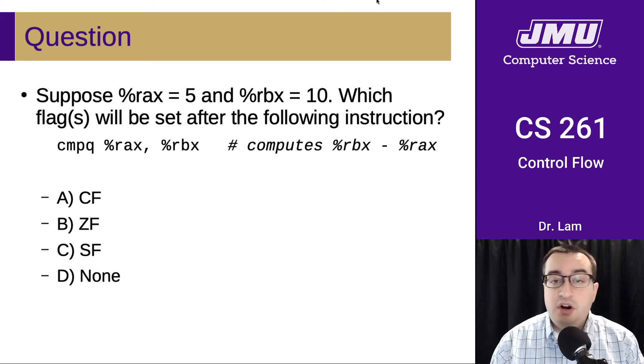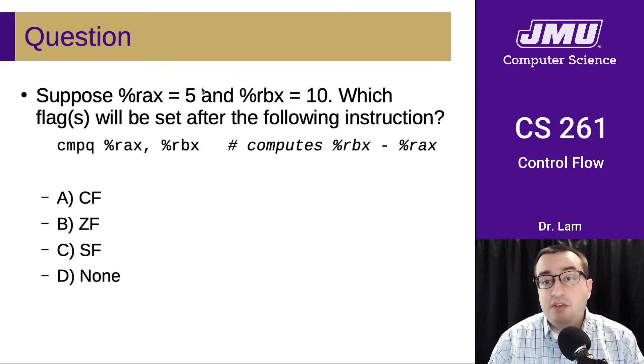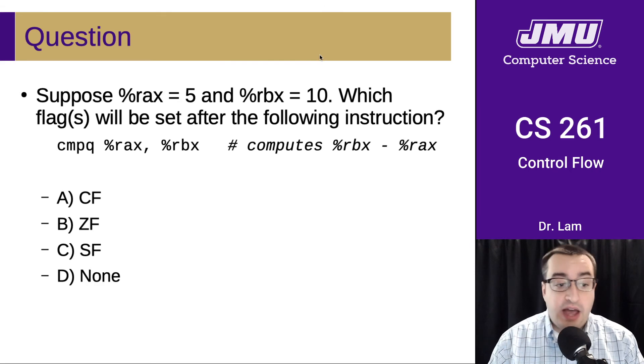Here's the first one. Suppose that RAX is 5 and RBX is 10. What flags are going to be set after this comparison? If you took a minute to think about that, we're subtracting RBX and RAX, so we're doing 10 minus 5. That's going to give us 5 back. We didn't have to carry, so we didn't have to borrow in in order to do that. So the carry flag will not be set. The result is not zero, so the zero flag will not be set. And the result is not negative, so the sign flag will not be set. So the answer here is none.